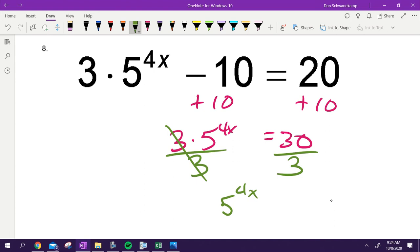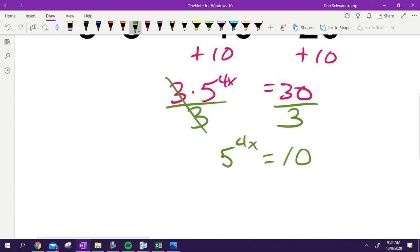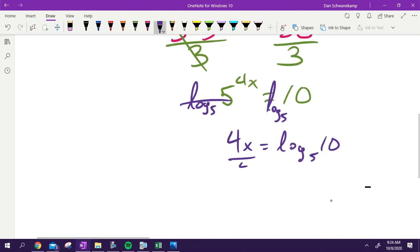I get 5 to the 4x is 10. To get rid of 5 to a power, what am I doing? Log base 5 on both sides. So that's going to cancel. 4x is equal to log base 5 of 10. And then finally, I would divide by 4.